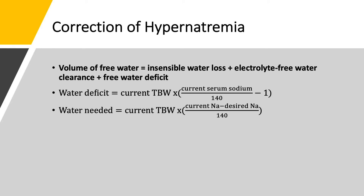With these three components, we reach the volume of water needed to be replaced. Alternatively, we can define the desired serum sodium. If we have a serum sodium of 160 and want to lower it to 150, we use the second equation: (current sodium minus desired sodium) divided by 140, times current total body water. We then add insensible water loss and electrolyte-free water clearance, and this tells us how much water to give today versus the total volume.